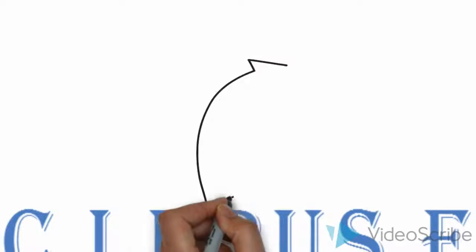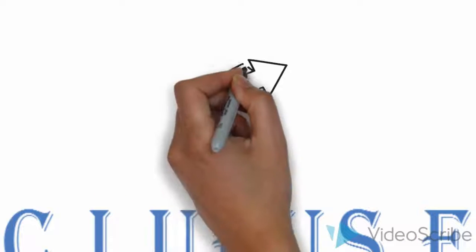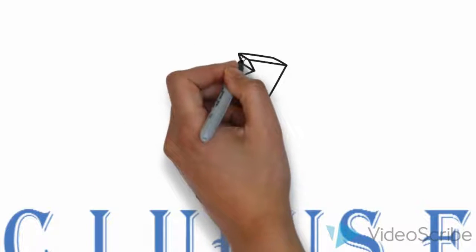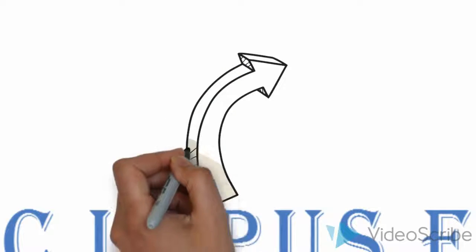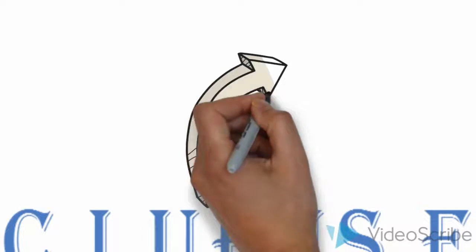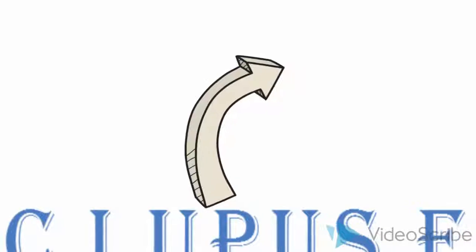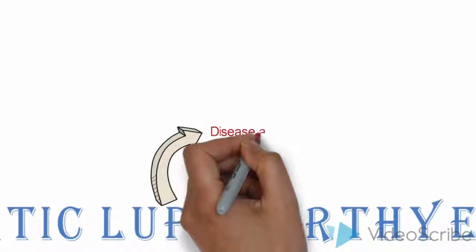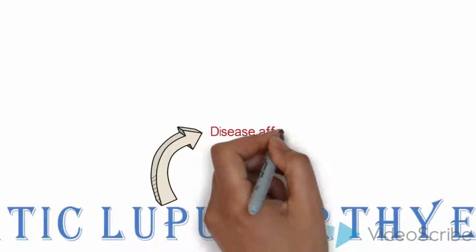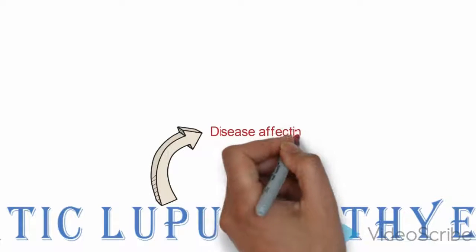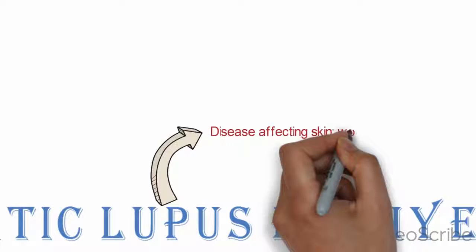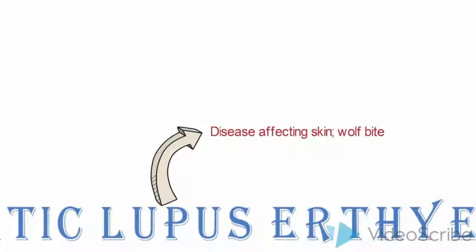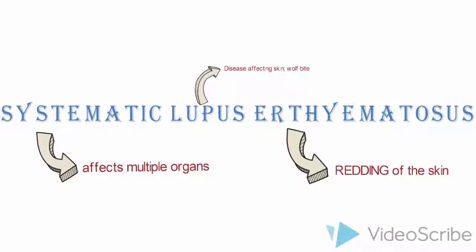And then we have lupus. The Latin word lupus means wolf. But in the modern day, lupus means disease affecting the skin. And because most of the abrasions on the skin look like wolf bites, that is why it got the word lupus. So basically, it's a disease affecting the skin that looks like wolf bites.